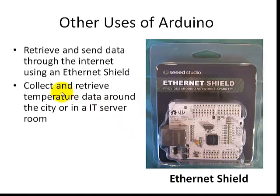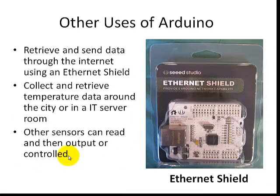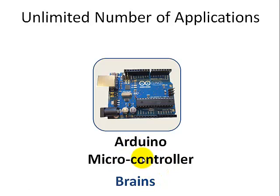The Arduino Uno has a large supply of different shields to expand its capability. For example, you can use it to collect and retrieve temperature data around the city, or simply monitor the temperature of an IT server room. Other sensors can be used to read and then output or control whatever devices you need connected to the Arduino. Basically, the Arduino has an unlimited number of applications, and the Arduino microcontroller serves as the brains of the system you're trying to build.